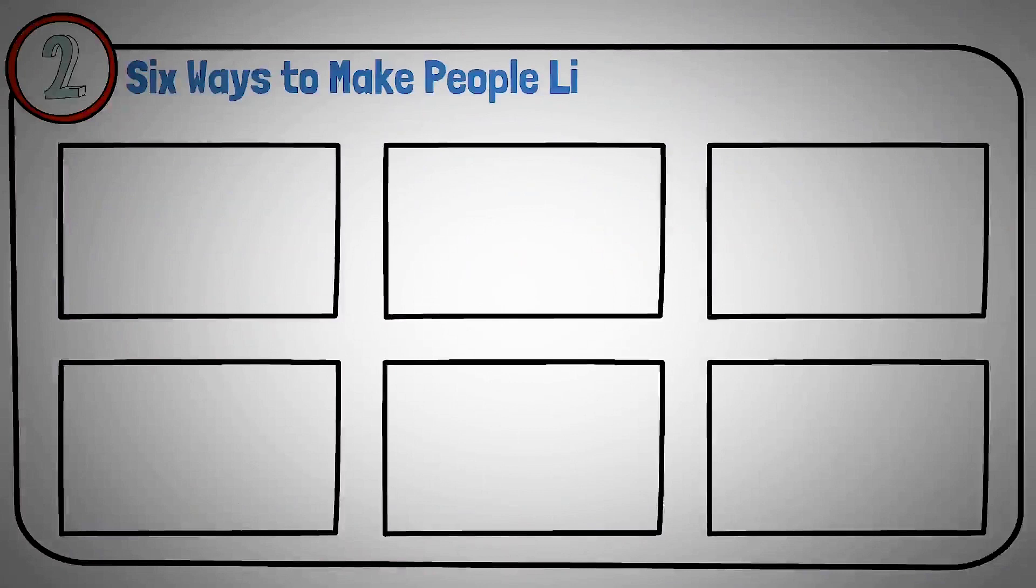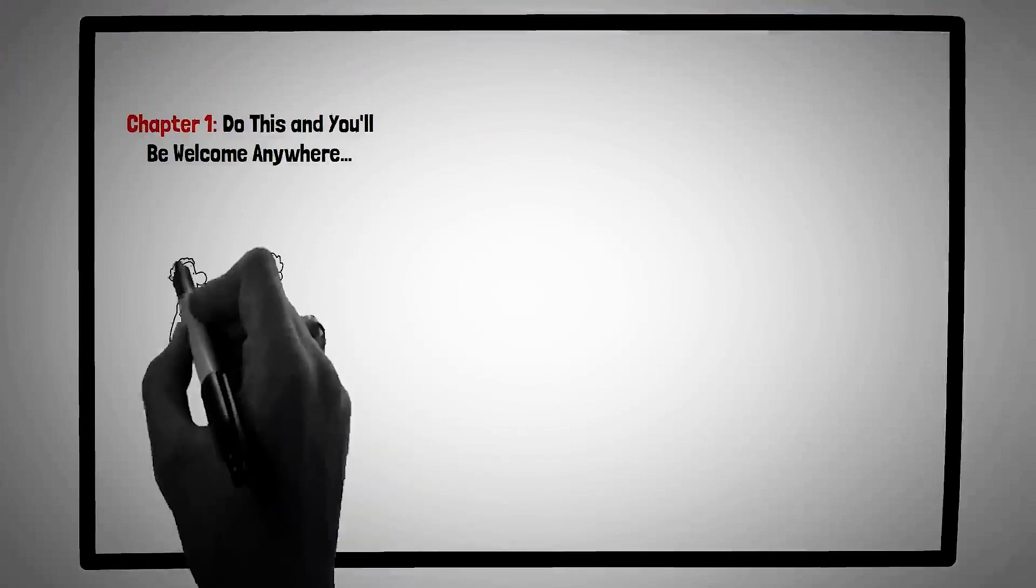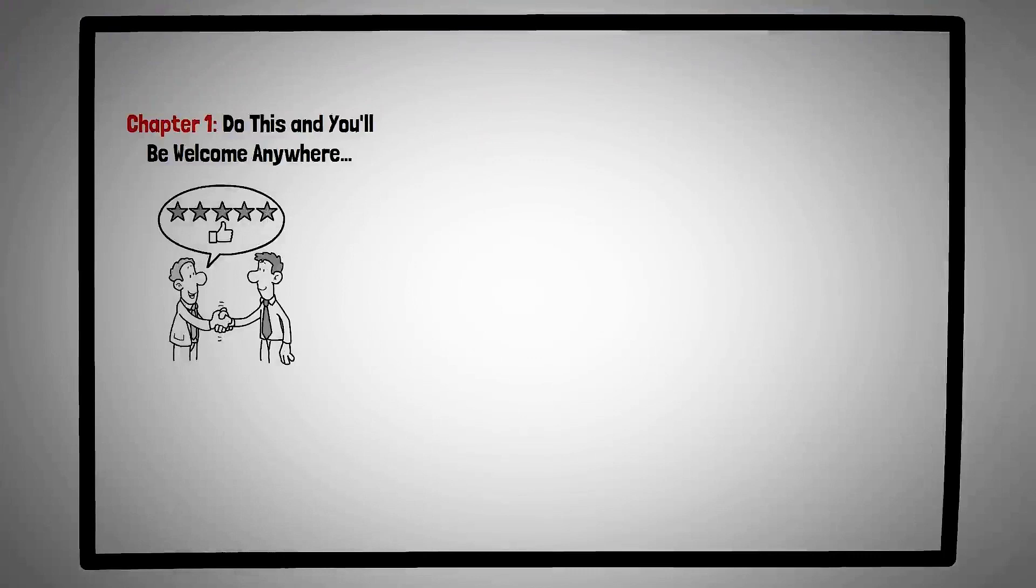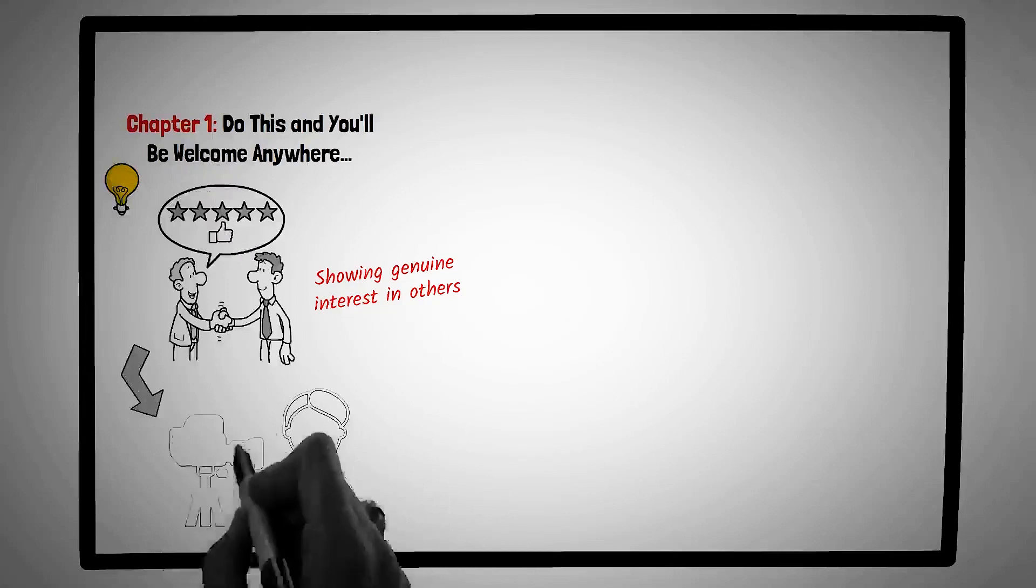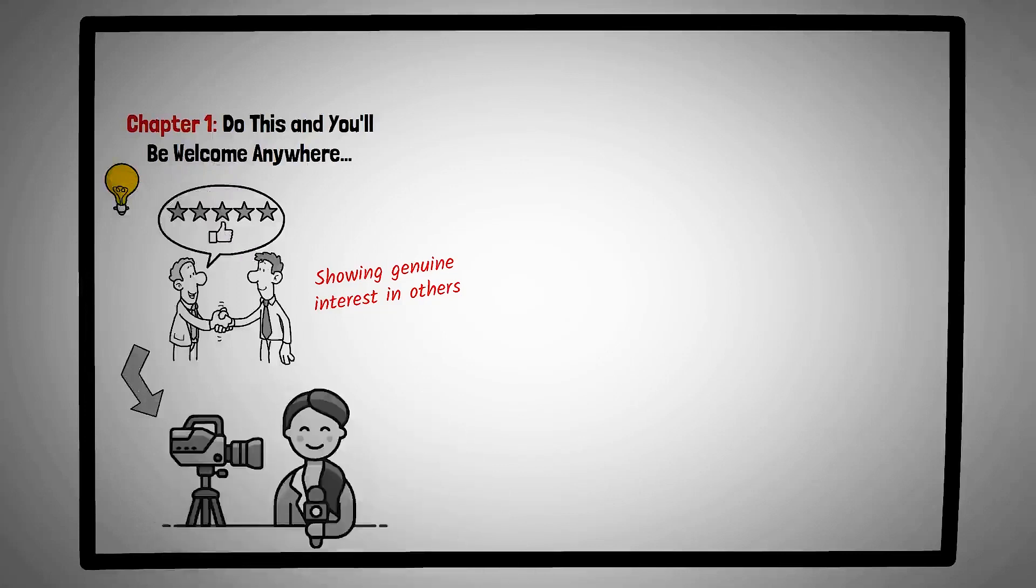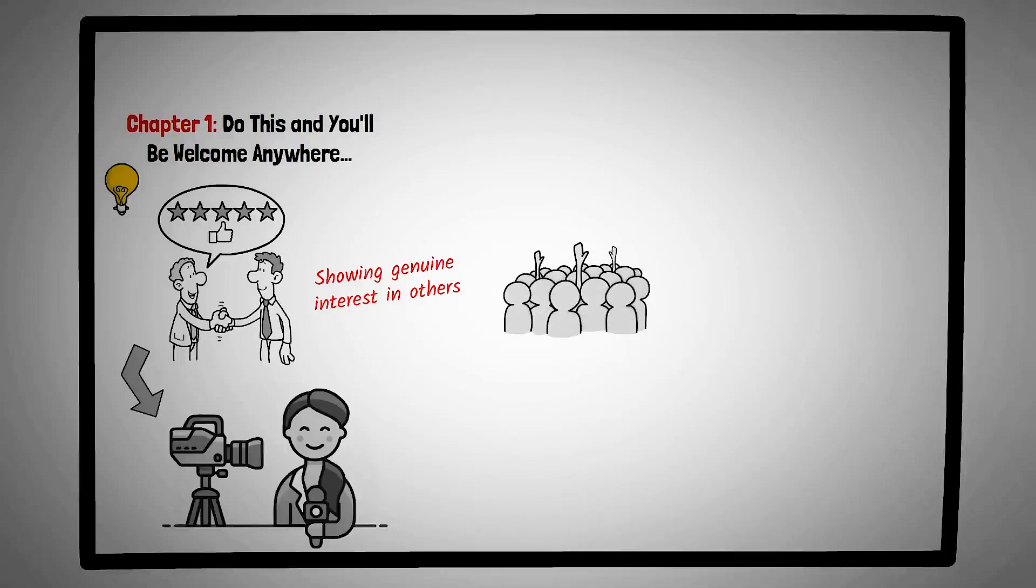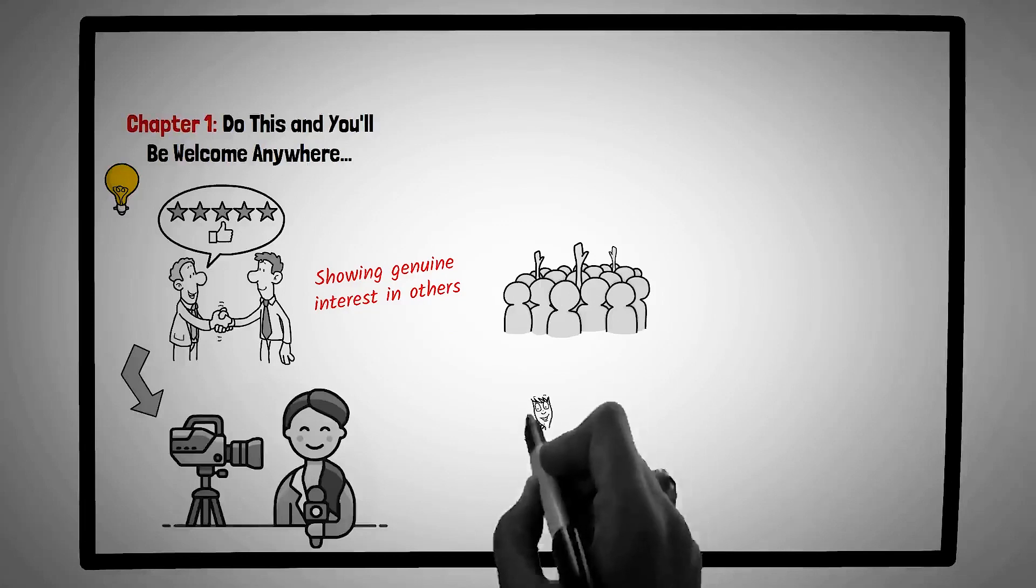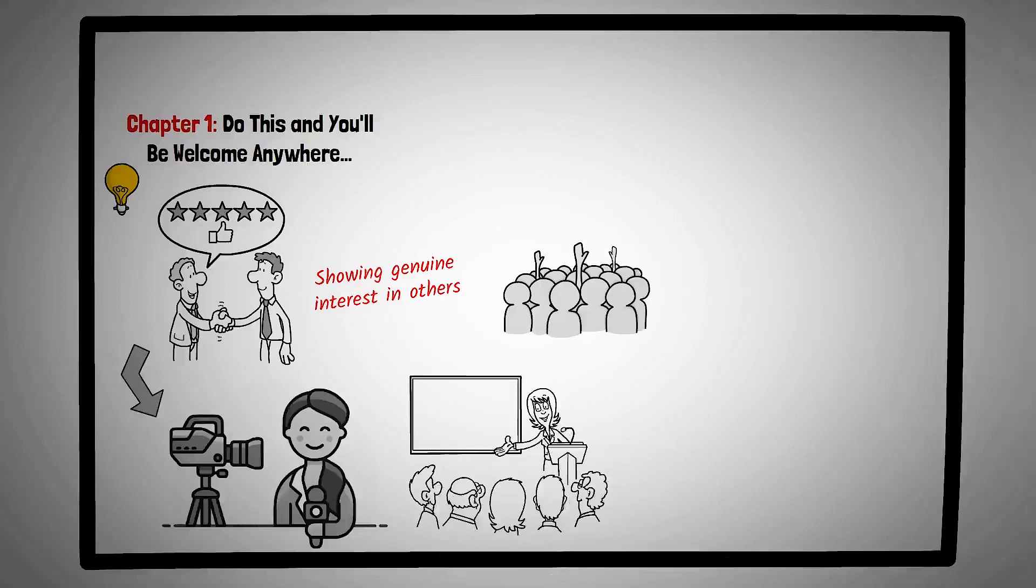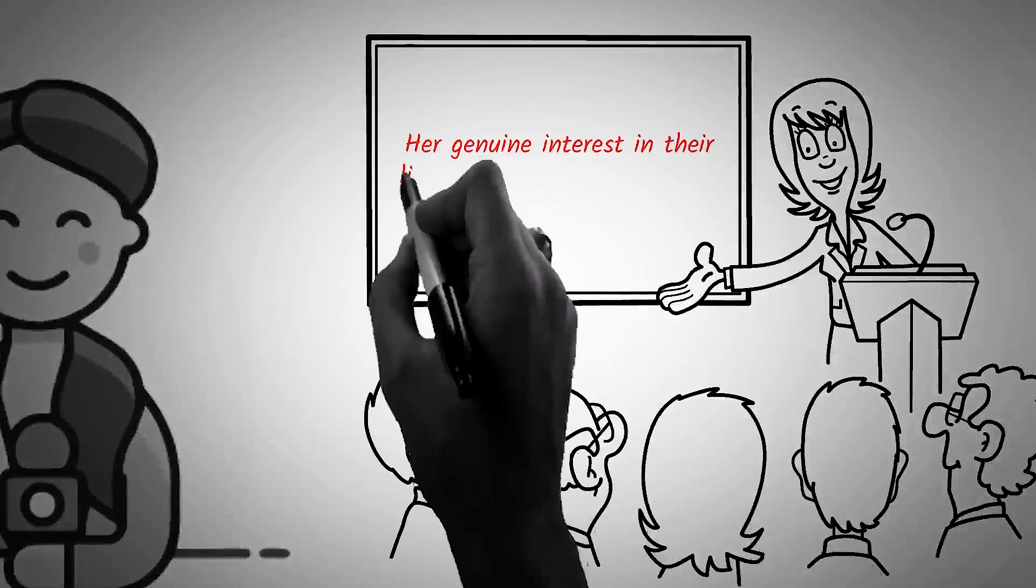Part two: six ways to make people like you. Chapter one, do this and you'll be welcome anywhere. One of the most profound ways to create a lasting impression and build meaningful relationships is by showing genuine interest in others. In this chapter, the spotlight is on the transformative power of genuine interest and how it can open doors to countless opportunities and connections. Let's take the story of Emma, a journalist assigned to cover a local community event. While other reporters quickly gather their stories and leave, Emma takes her time engaging with the attendees, asking about their experiences and listening intently to their stories. By the end of the day, not only does she have a richer, more detailed article, but she's also made connections with several community members who now see her as a trusted ally and friend. Her genuine interest in their lives made all the difference.